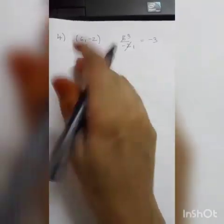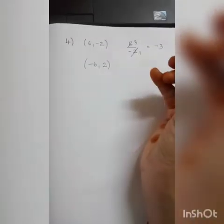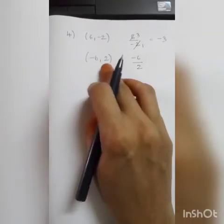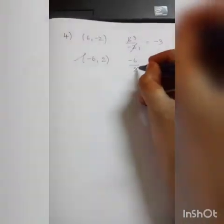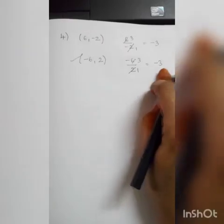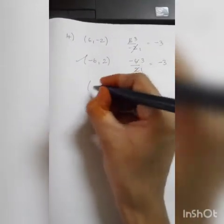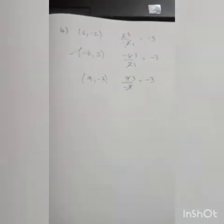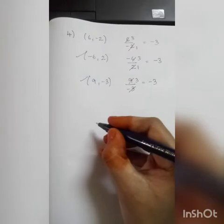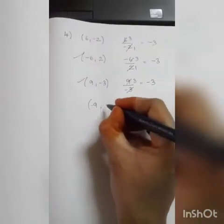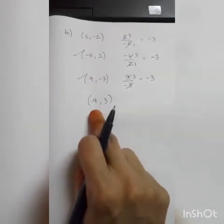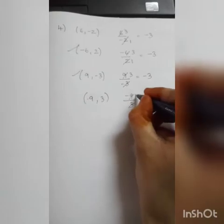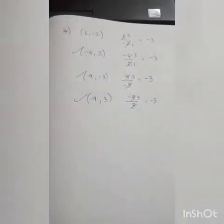Likewise, you can take some more pairs. Shall I take minus 6 by 2? Minus 6 by 2 — because minus 6 is a negative integer and 2 is a positive integer, so this is different from the first pair. This is one pair, and minus 3 is the answer we are getting. So what is the second pair? 9 comma minus 3. Third pair: minus 9 comma 3. I am just changing the signs — this is different because here positive 9 and here negative 9; here negative 3 and here positive 3. So if you divide these two, what will I get? Minus 3. So this is my third pair.